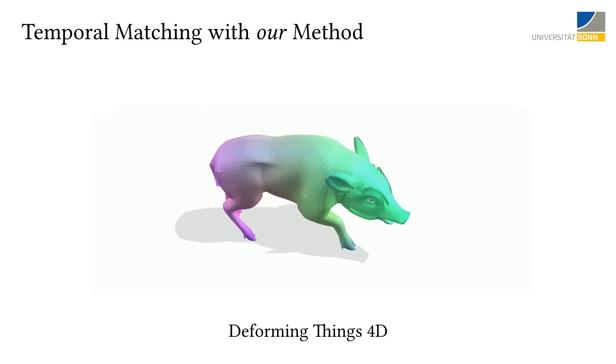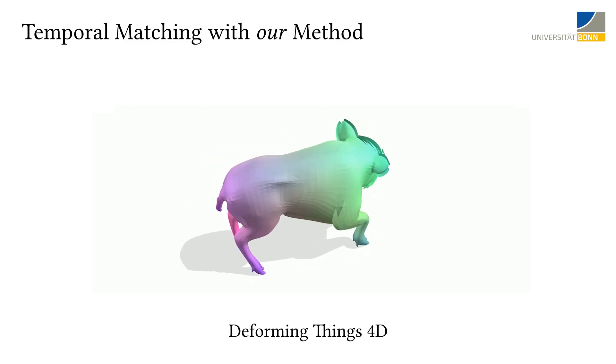Furthermore, we use our method on motion sequences of the Deforming Things 4D dataset and match every frame to its successor, which allows us to propagate coloring from the first to the last frame. We can see that our method is able to compute temporal matchings without explicitly considering time.